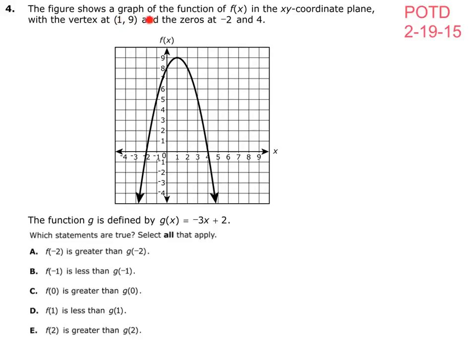The figure shows a graph of the function f of x. This graph right here is f of x, and we can tell that it's a second-degree polynomial — a parabola in the xy-coordinate plane — with the vertex at (1, 9). The zeros are negative 2 and 4, which is where it crosses the x-axis, at negative 2 and at positive 4.